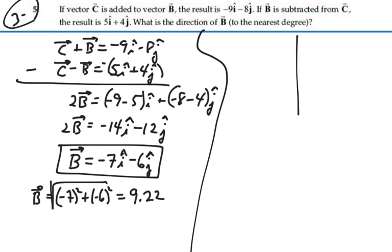If we were to graph it, it would look like this. Here's X and Y. We would have to go -7i